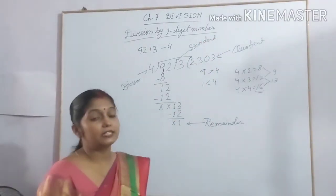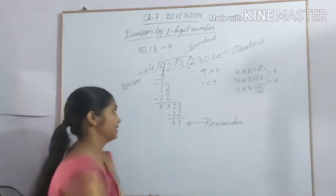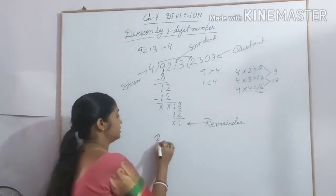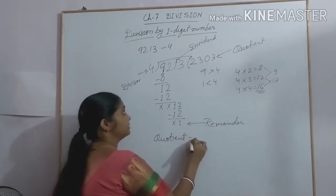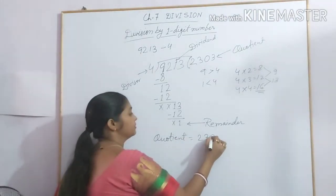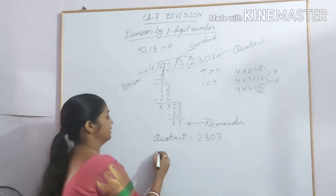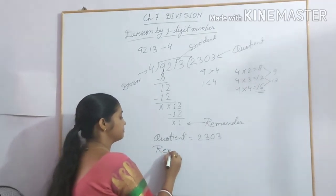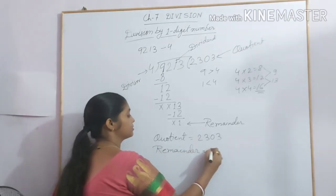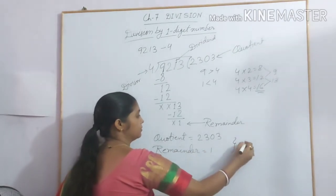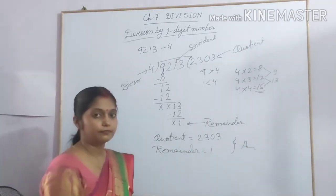So if the question is to write the quotient and remainder, you can write here: Quotient equals 2, 3, 0, 3, that's 2303. And remainder equals 1. So this is your answer. Thank you.